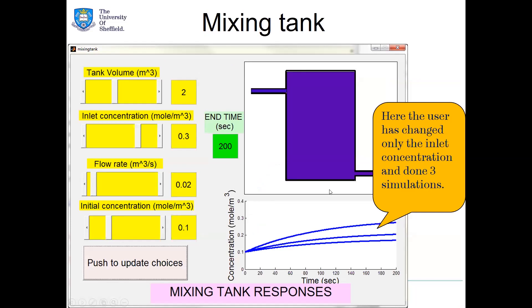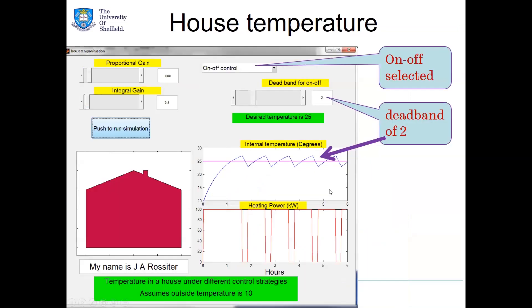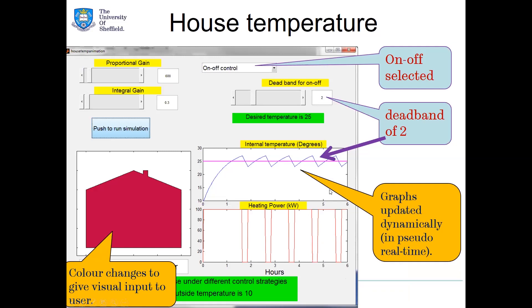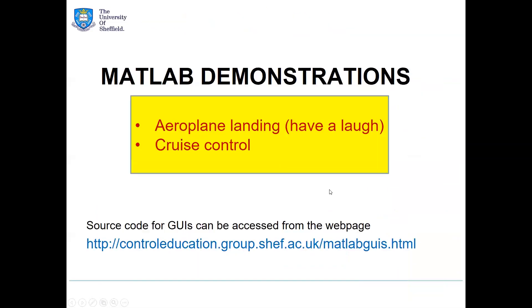I'll demonstrate a couple. The first is an aeroplane landing GUI — really just to have a bit of fun, not overly serious — and a cruise control GUI. If you want to see lots of GUIs there's a website where you can download them and give them to students. This simple one has three sliders: mass, stiffness, and damping. There's a place where students enter their name — useful if you want to use these for assignments. Press run and you see a passenger bouncing up and down. Change the mass or stiffness, run it again — the idea is it's a bit of fun: is that a comfortable landing or not?